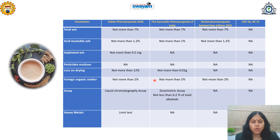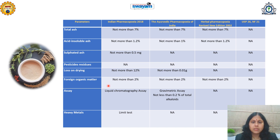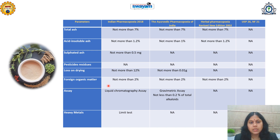In the Herbal Pharmacopeia, loss on drying is not mentioned. Foreign organic matter means any material other than the biological source — for Ashwagandha, the root is the major biological source. If other plant parts, weeds, debris, soil, or animal excreta are present, that constitutes adulteration. Foreign matter should be evaluated according to standard procedures. As per the Indian Pharmacopeia, Ayurvedic Pharmacopeia, and Herbal Pharmacopeia, not more than 2% foreign matter should be present.